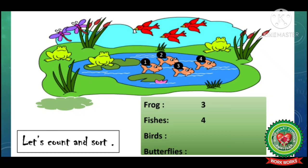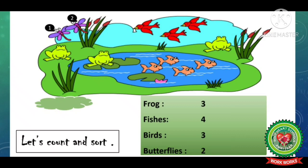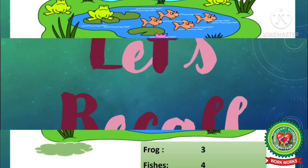Like this we will be counting and writing — that is sorting. Now how many birds are there? 1, 2, 3 — so in front of birds we will write 3. Now what is the next thing given to us? Butterflies. How many butterflies are there? 1, 2. Like this we have sorted it out.